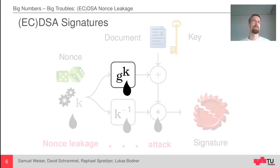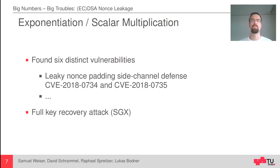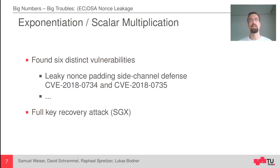Let's go on to the next one: exponentiation. Exponentiation is one of the most important steps and also one of the most analyzed ones. But still we found in total six distinct vulnerabilities, which mostly have to do with a certain scheme called nonce padding. Nonce padding itself is meant as a side channel defense to prevent this kind of leakage, but we found it to be leaky itself. It was awarded with two CVEs, and we also showed a full key recovery attack in practice in an SGX setting.